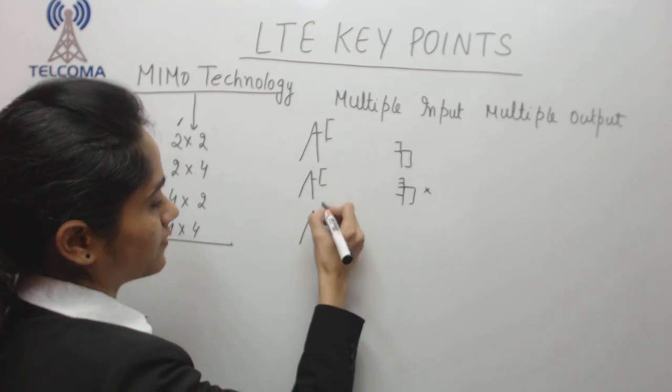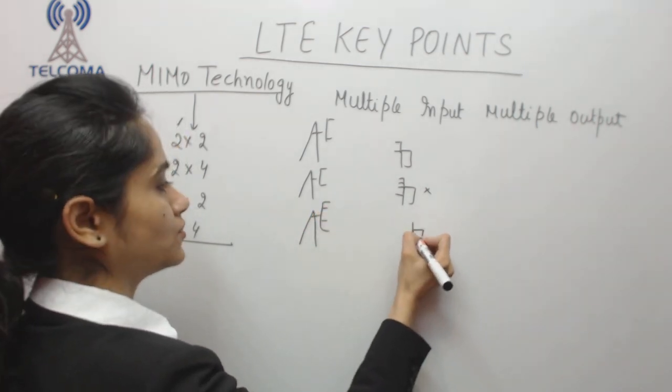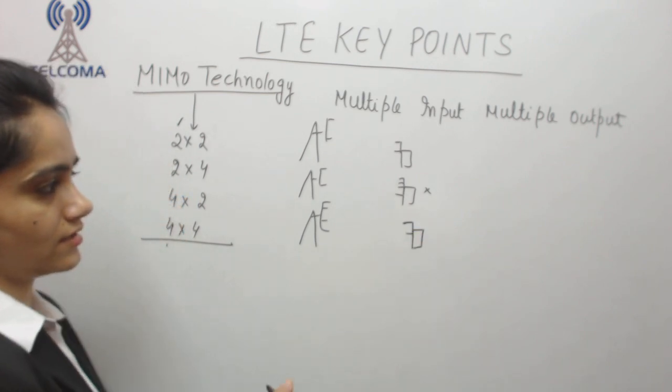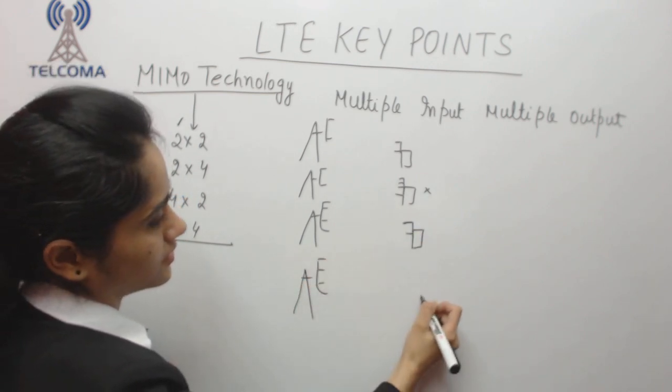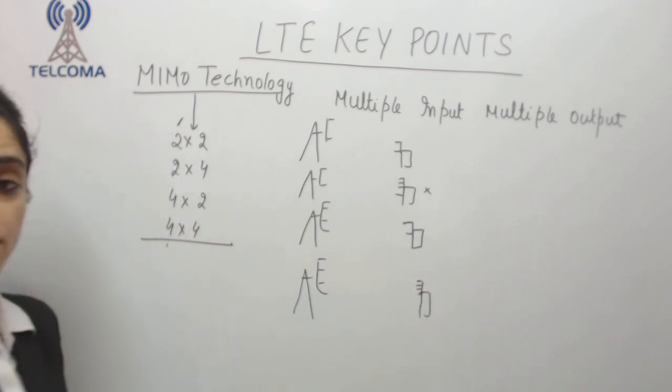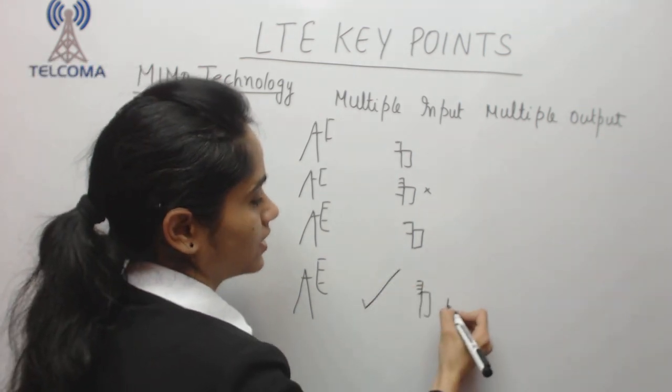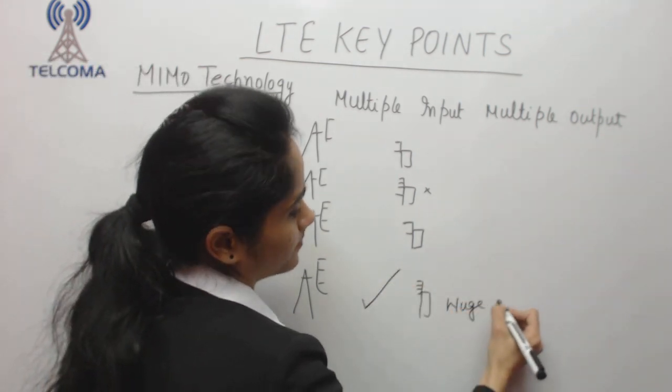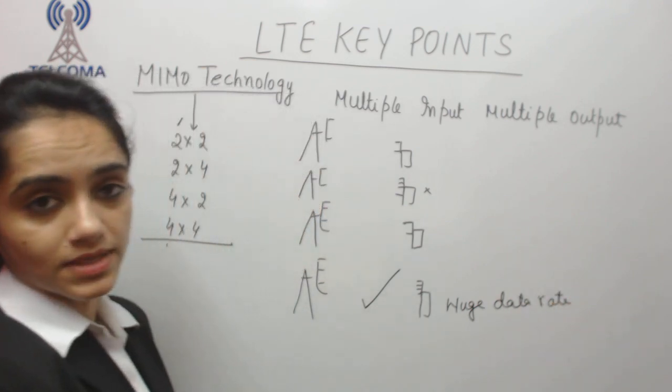4x2 means we have 4 transmitter receivers and 2 transmitters at the UE end. Whereas in this case we have 4 at the network and 4 at the UE end and this is the highest configuration for having huge data rate but practically our user equipments are using this configuration.